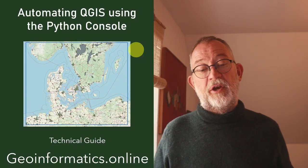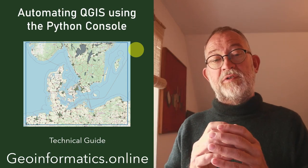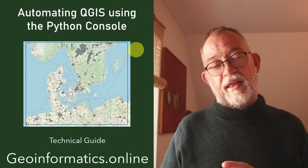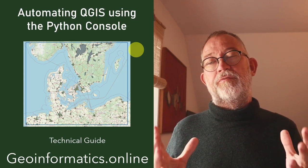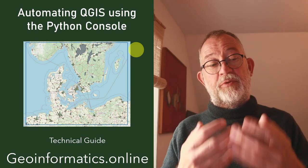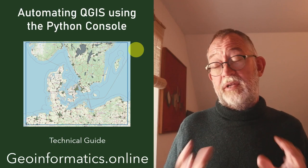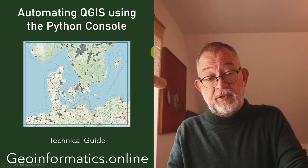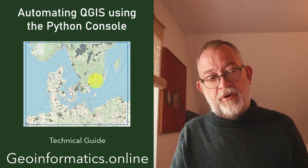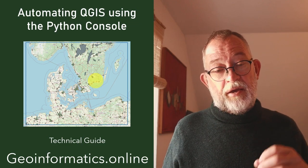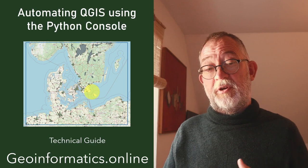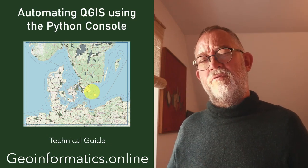Welcome to this technical guide on how to automate QGIS using the Python console. It might sound a bit scary, but it's rather easy. Anyone who has worked with geodata knows there's a lot of annoying housework with moving data, reprojecting, and so on. This video exists because I'm working on a lecture about using QGIS to find locations, taking data from Natural Earth, clipping it around Denmark, and changing the projection to meters for a buffer tool.